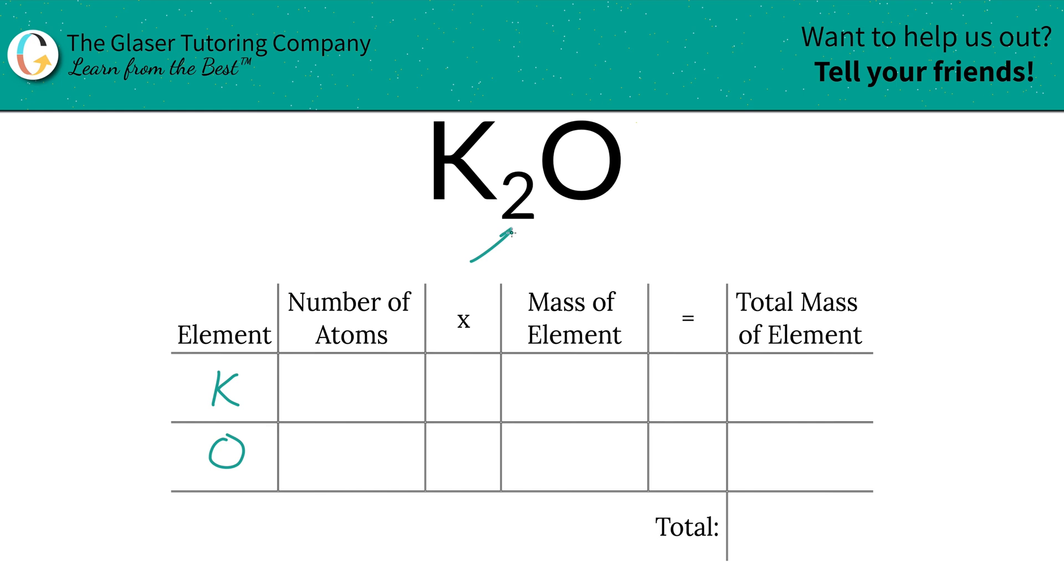Next, we identify the number of atoms. That's where the subscripts come into play. If you don't see a subscript for a particular element, just put in a one. So there's two potassium, one oxygen.